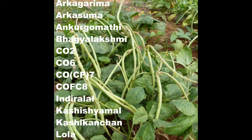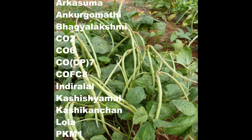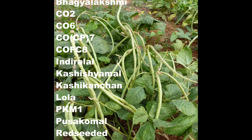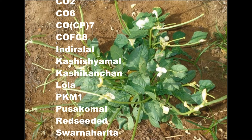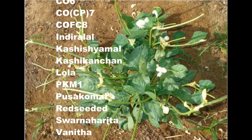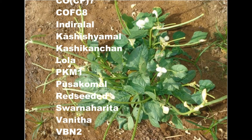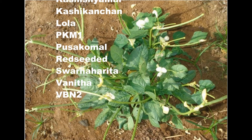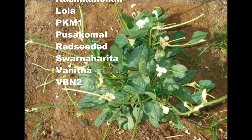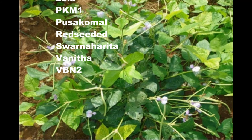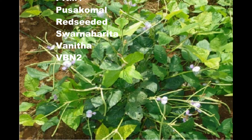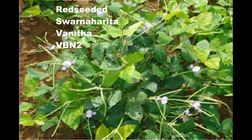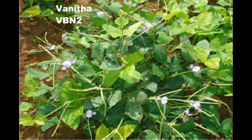Additional major varieties in India include Ko2, Ko6, KoCP7, KoFC8, Indralal, Kashik Yamal, Kashik Kanjan, Lola, PKM1, Pusa Komal, Red Seed 8 Kauppi, Swarnaharita, Vanita, and VBN2.